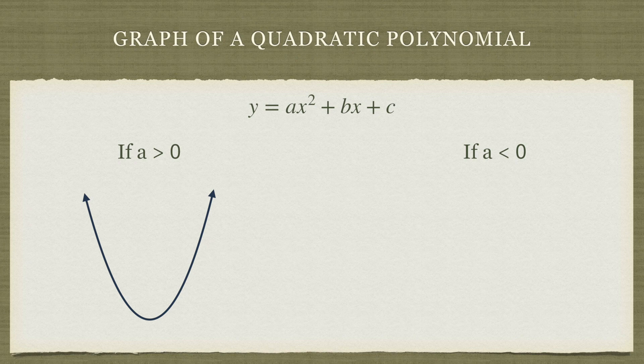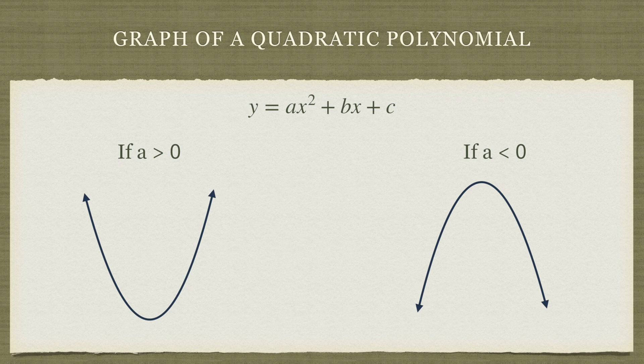Similarly, if a is less than zero, if it is a negative number, our parabola will always face downwards and it will always point downwards.